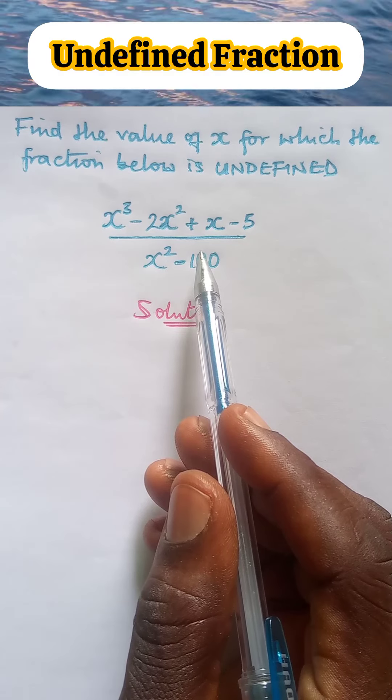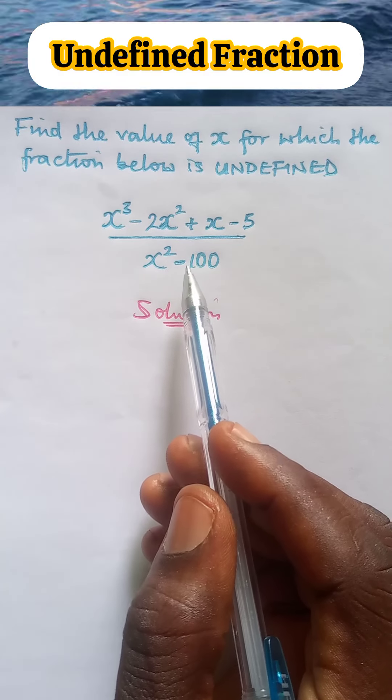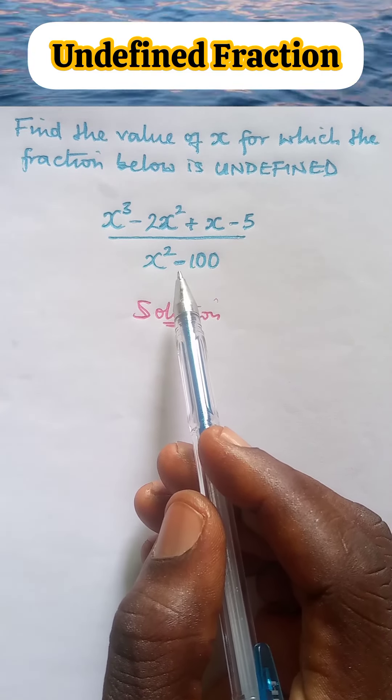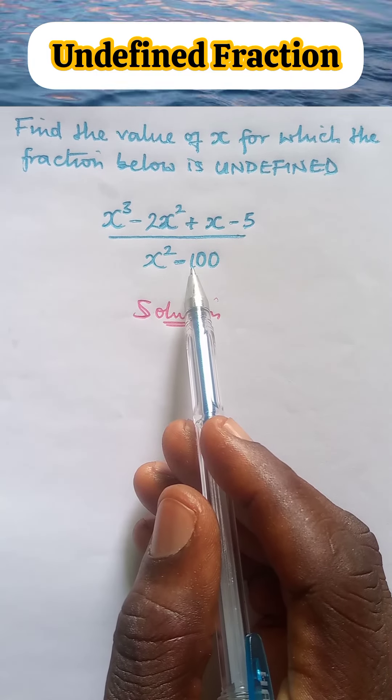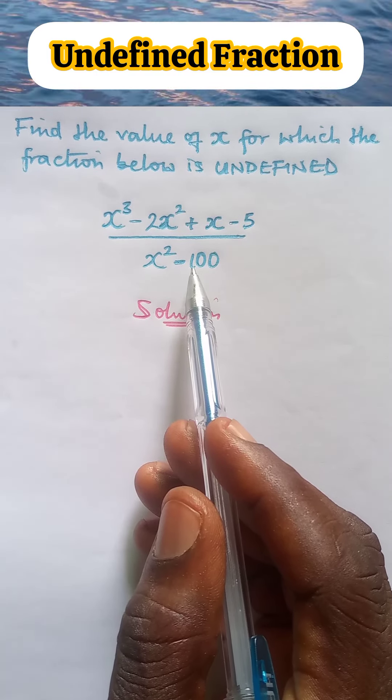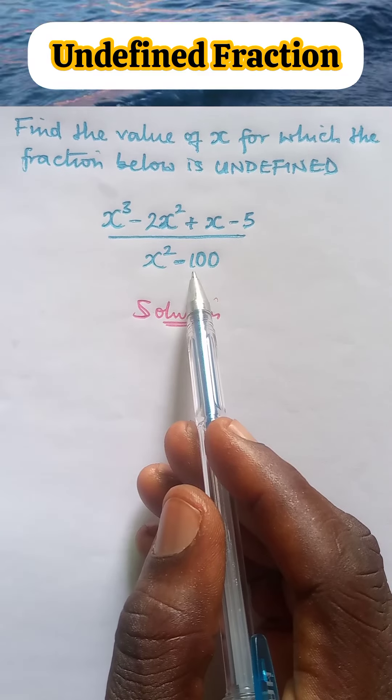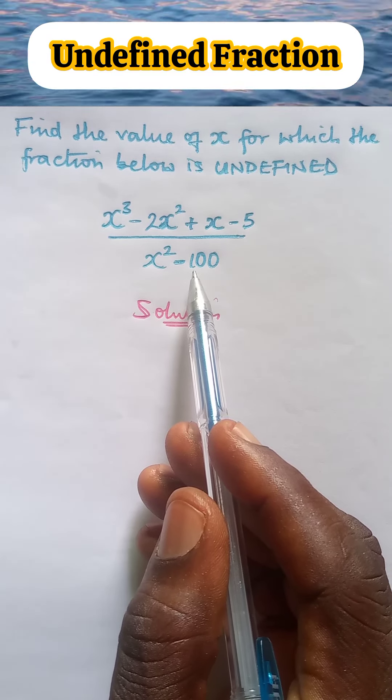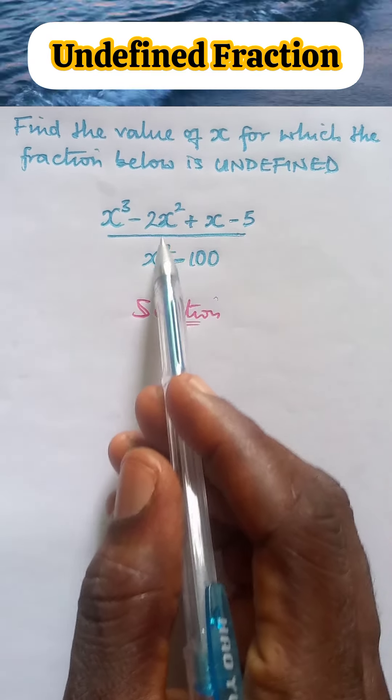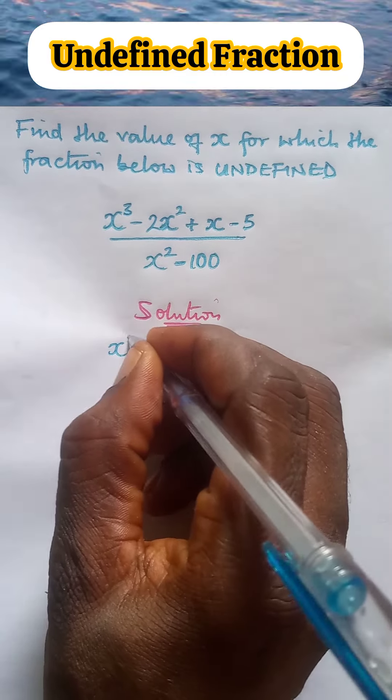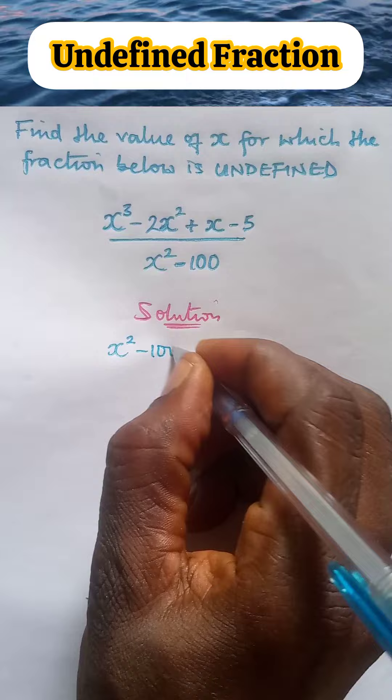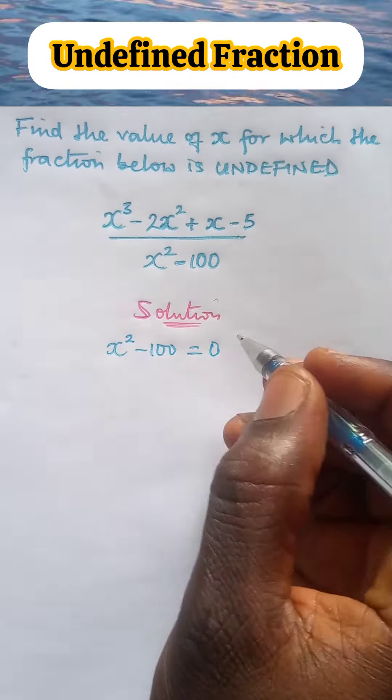This is one simple question you will find in mathematics if you know exactly what to do. A fraction such as this is said to be undefined if the denominator of the fraction is equal to 0. In other words, this fraction is undefined if the denominator, which is x squared minus 100, is equal to 0.